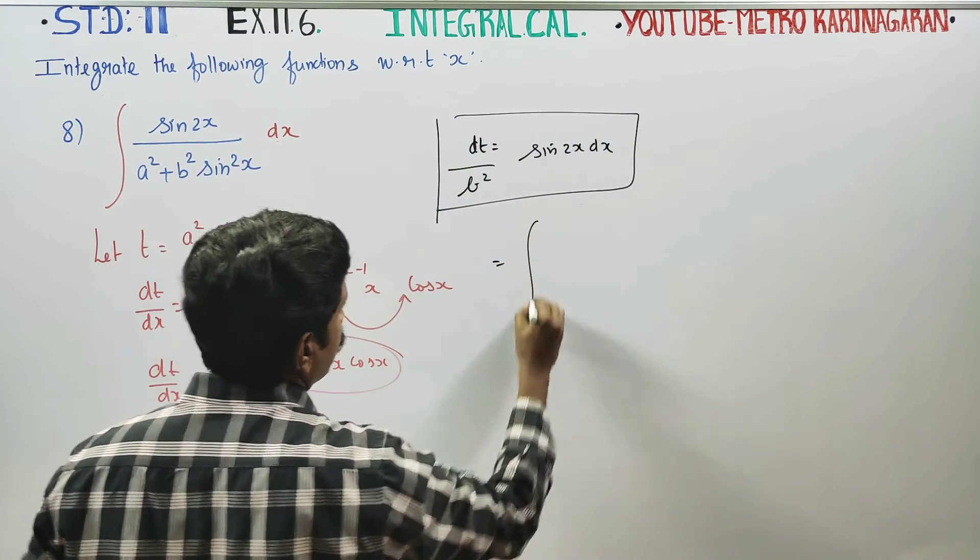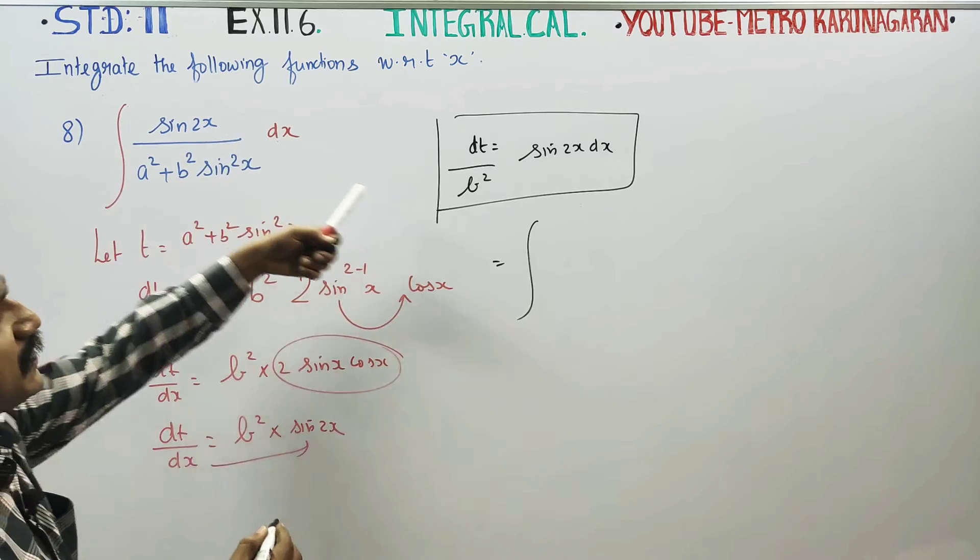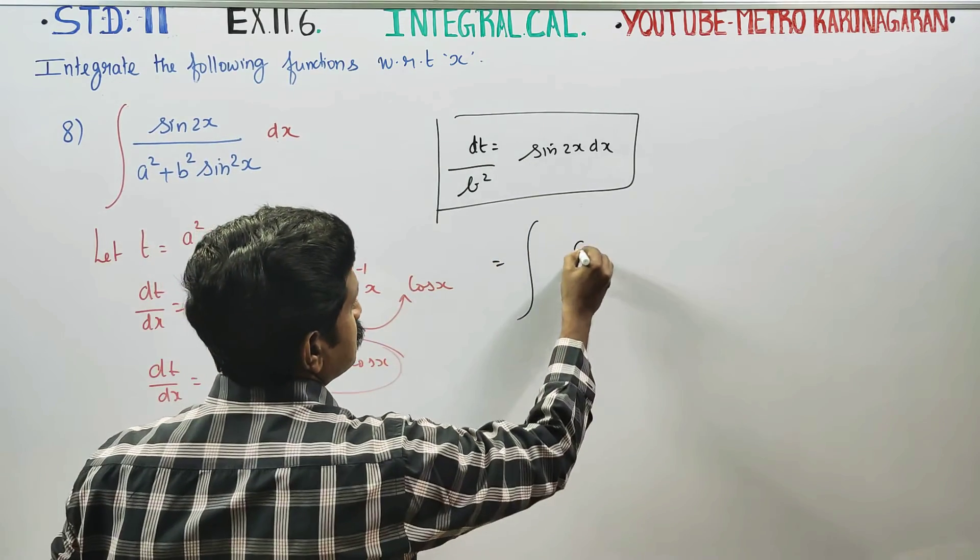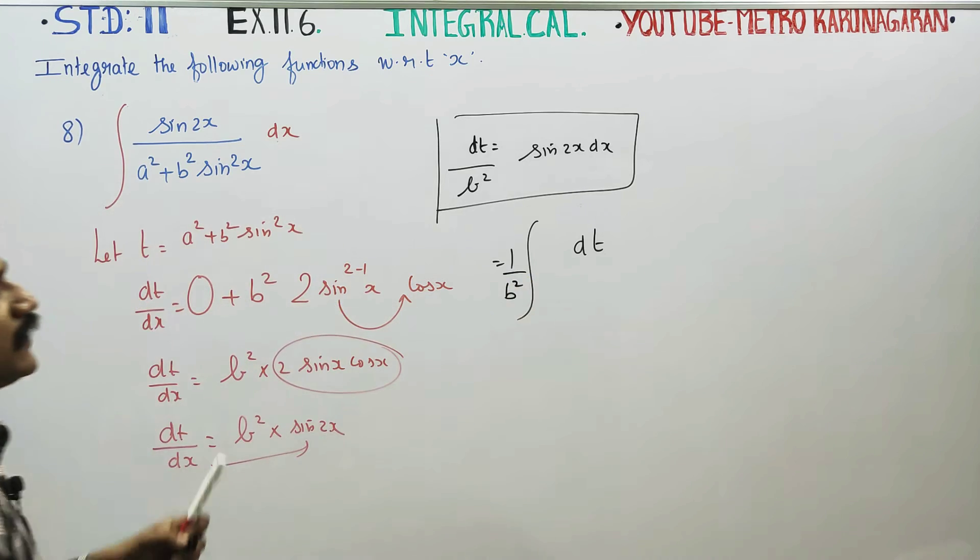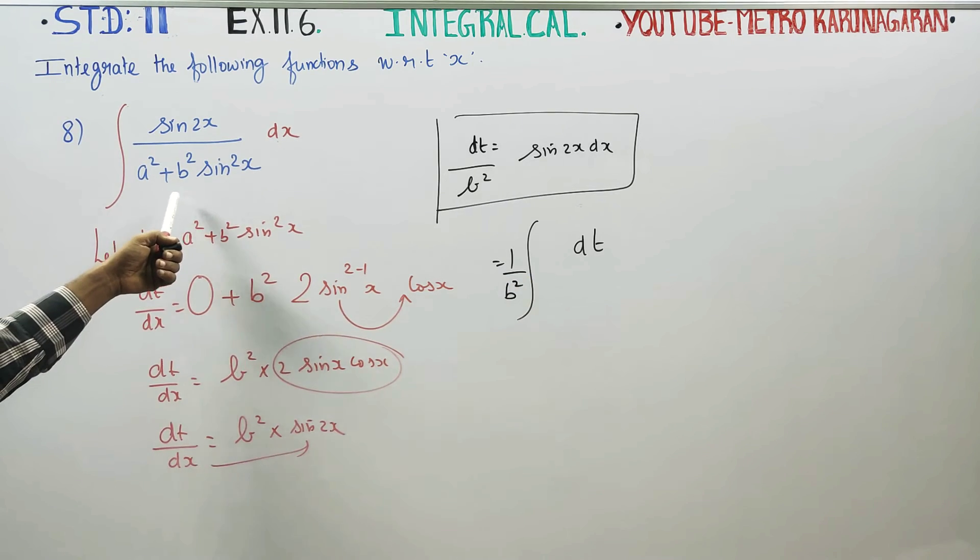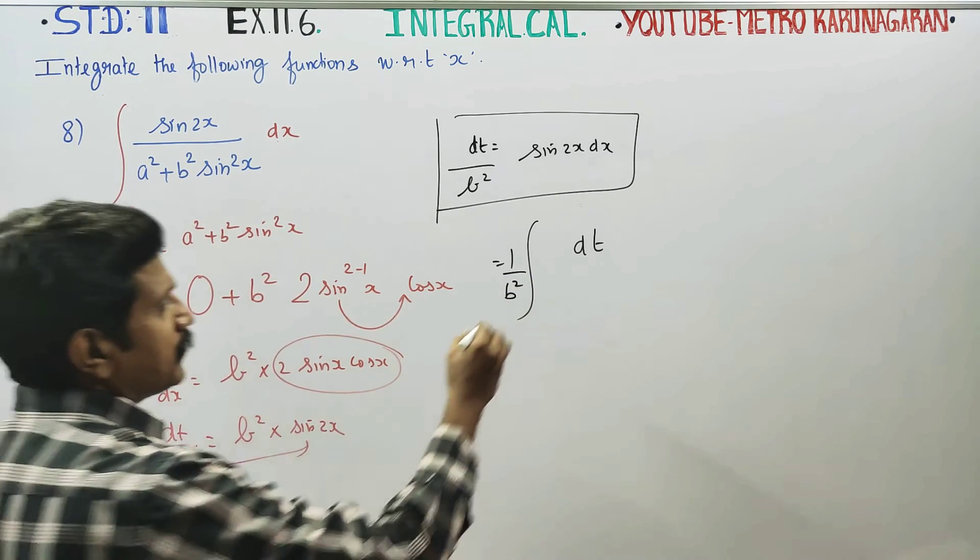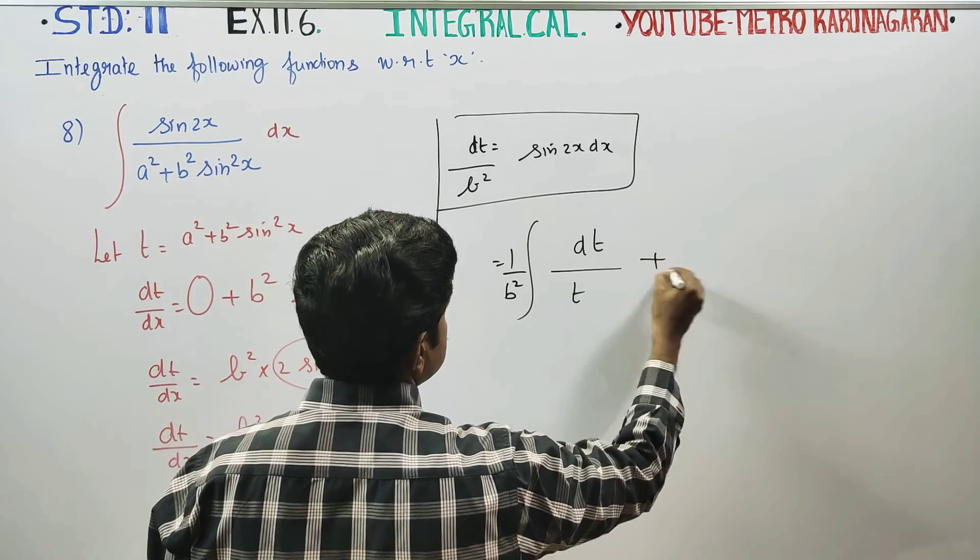Coming back to our main problem, sin 2x dx, you can use dt by b square. 1 by b square, and a square plus b square sin square x is replaced by t.